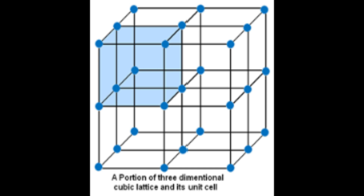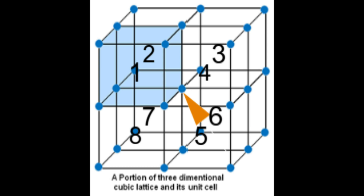Now, what we have to find out is: if we take any corner, how many total number of cubes share it? The same question applies for edges and faces. Looking at this diagram, you will find that one corner is shared by a total of 8 cubes. So, if any atom is present at that corner, it will also be shared between 8 cubes.